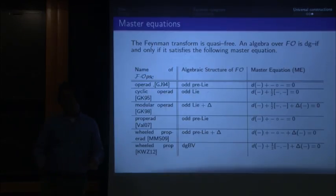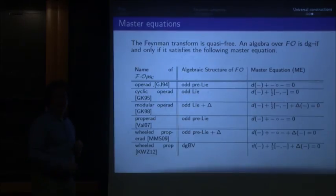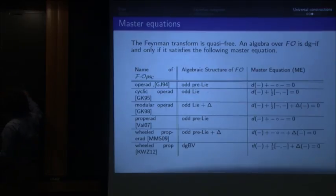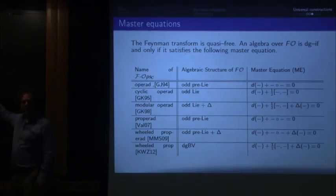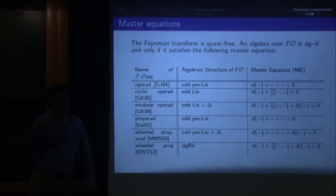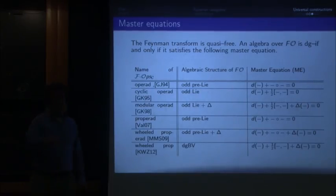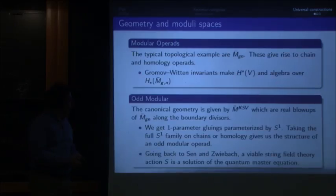This is again totally general — you just go through, do the Feynman transform, ask what's the equation, write it out. These terms correspond to the graphs you allowed. If you see a pre-Lie structure, it means you allowed exactly graphs of the type with roots — and pre-Lie is an ordered way of doing things. If I don't have roots, I can't tell the difference between the two orderings — I just get Lie. The delta comes from self-gluing. So what does this have to do with geometry and why did I get interested in the first place? It's not that I was born a category theorist — it just happened to be that this was the right language.